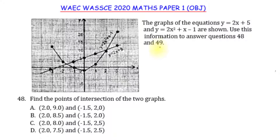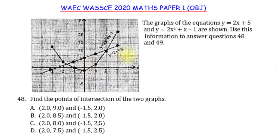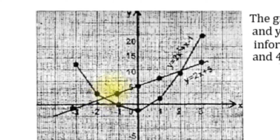We are to use this information to answer questions 48 and 49. In question 48 we are told to find the point of intersection of the two graphs. Normally we would plot the graphs and look for the points of intersection — in this case the two points shown in red.